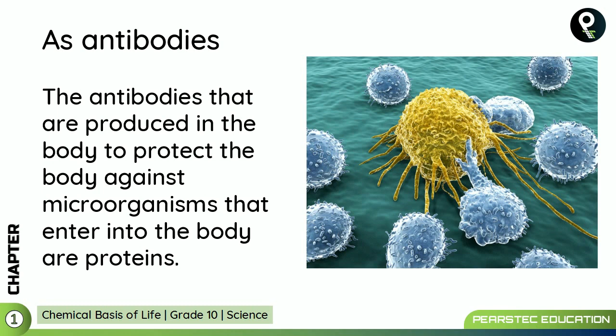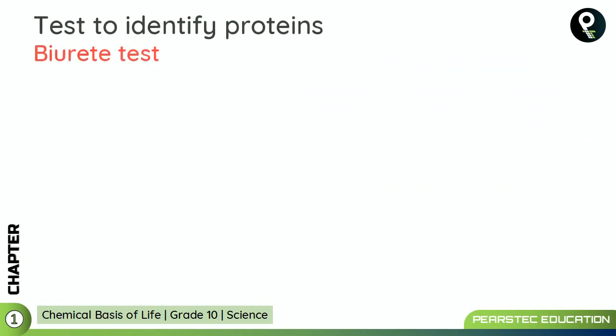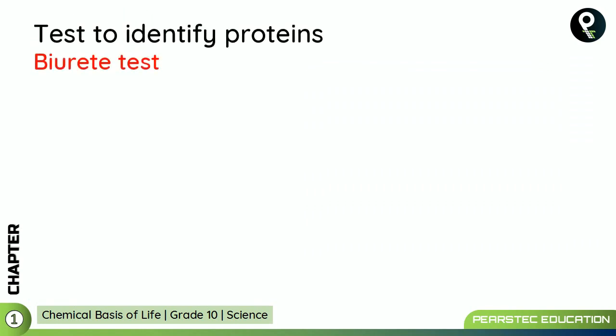The most important role is that of antibodies. The antibodies produced in the body to protect against microorganisms that enter the body are proteins. White blood cells definitely need enough proteins to fight the enemies entering the body. Now let's do a test to identify proteins.